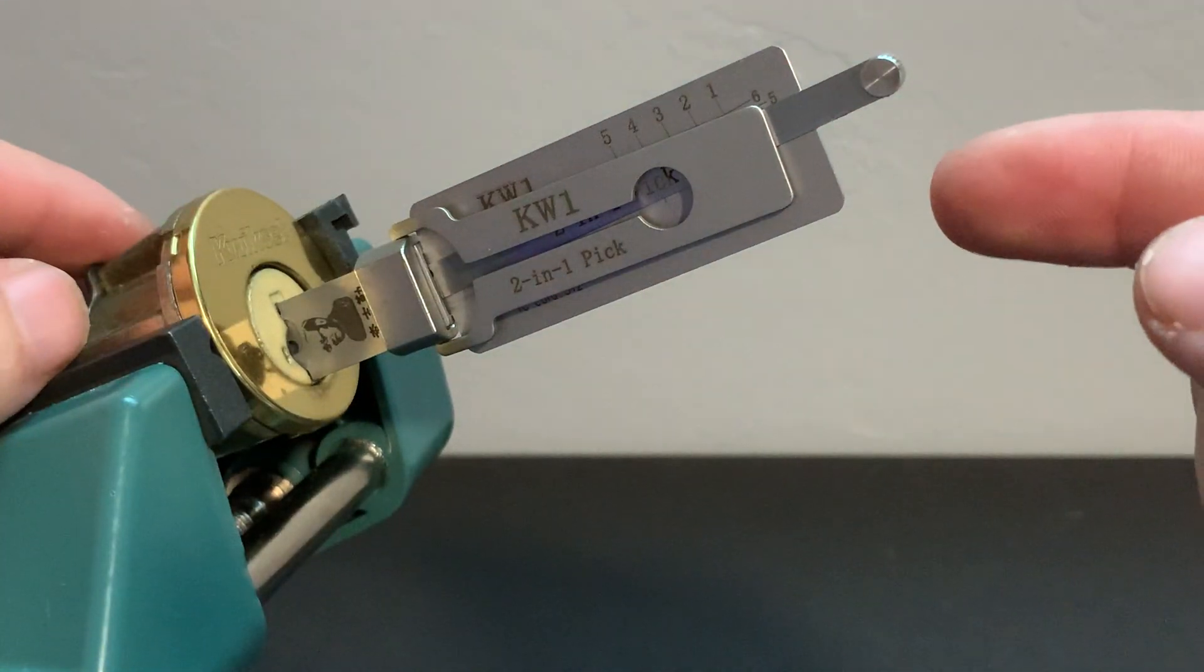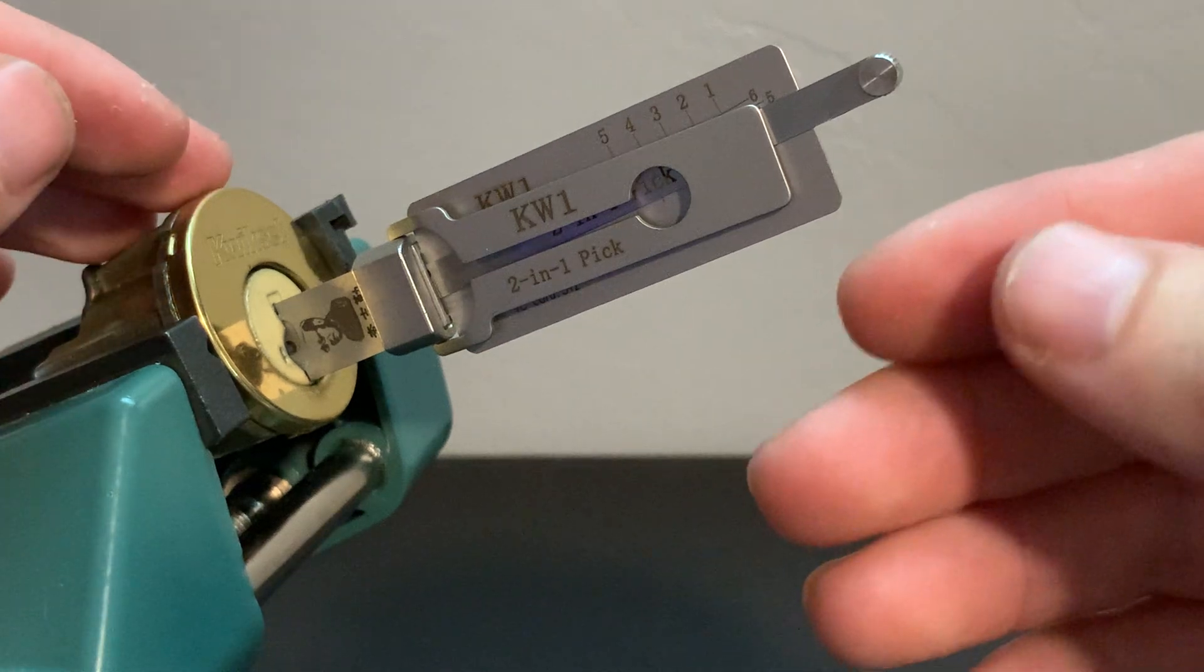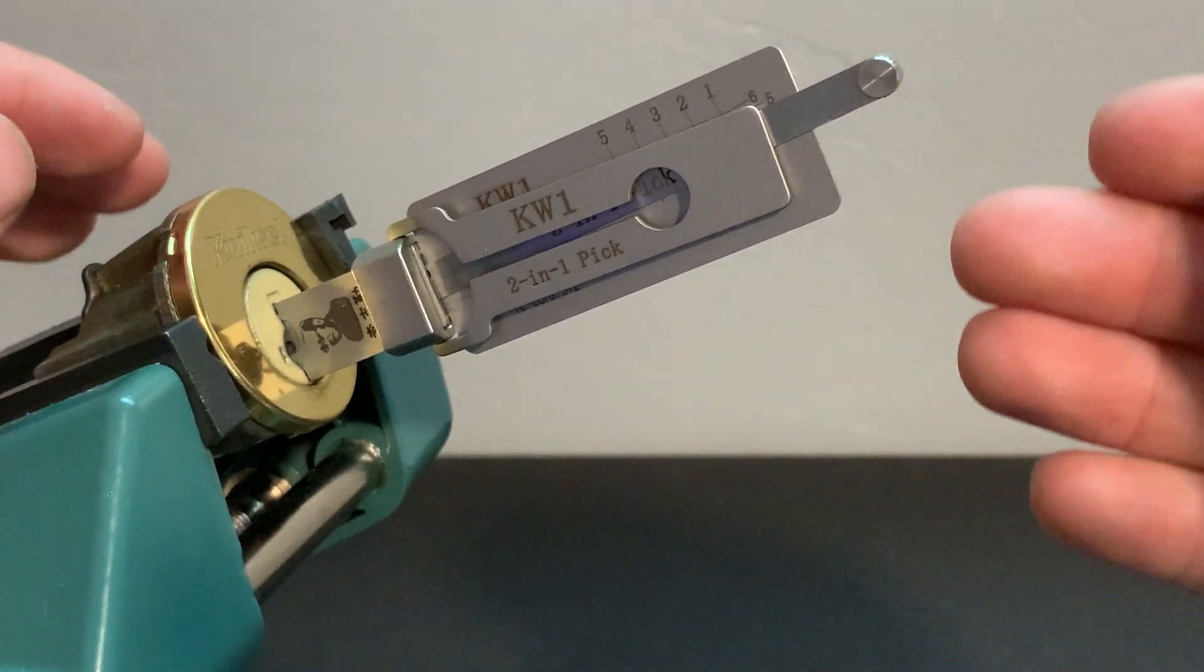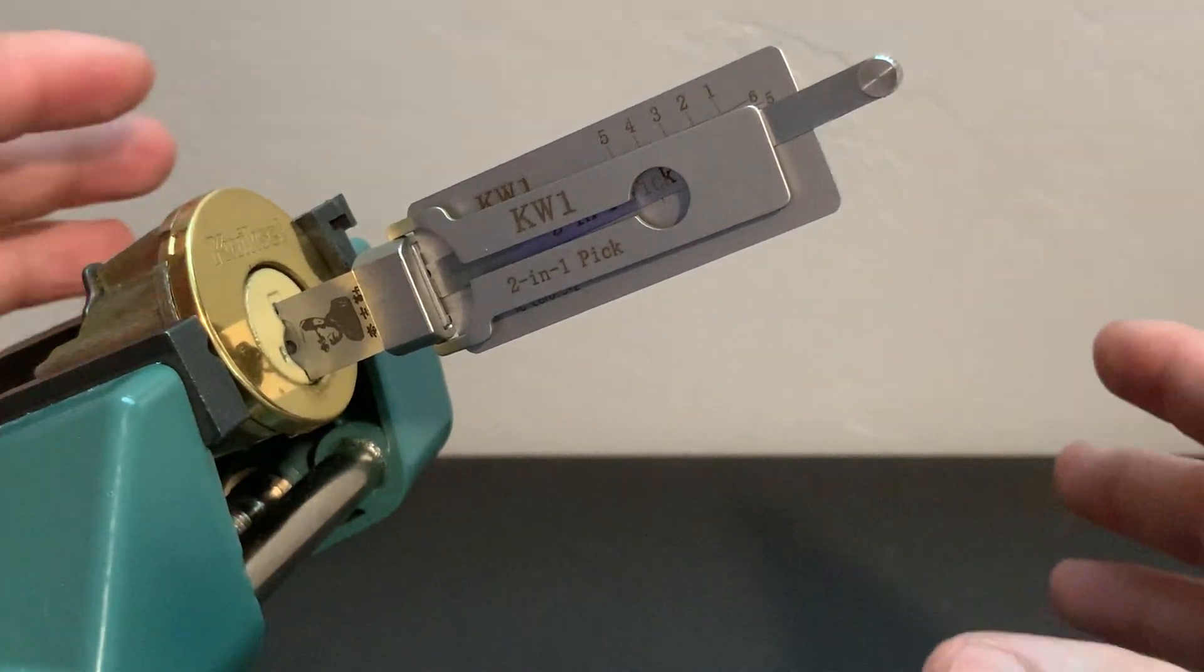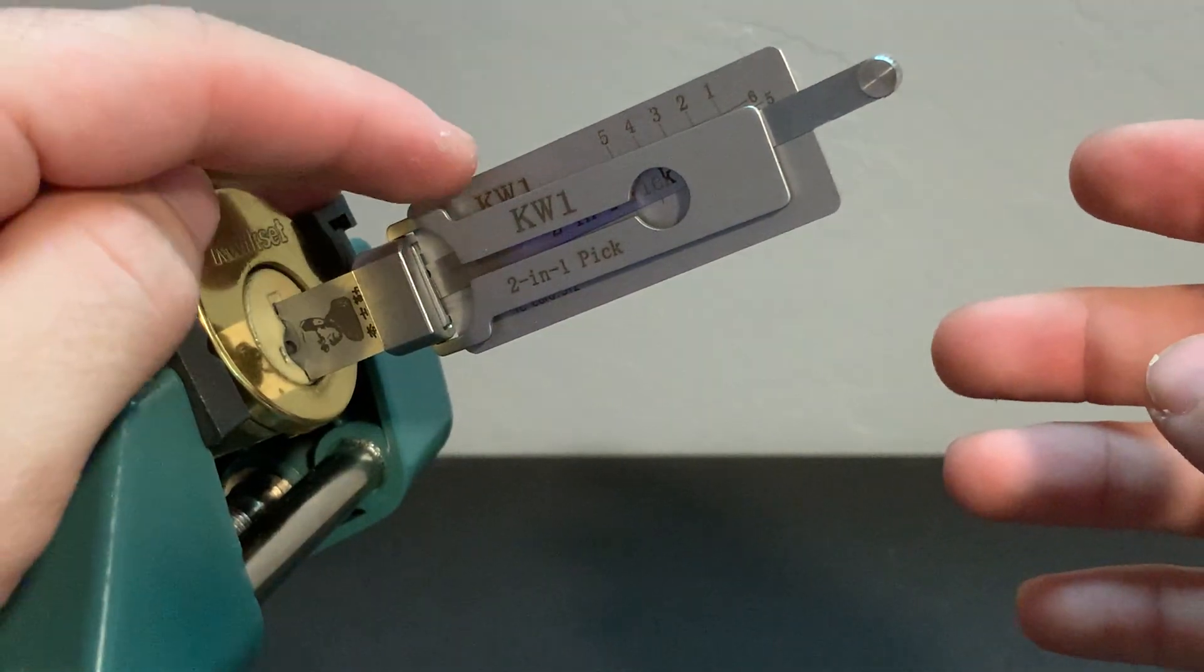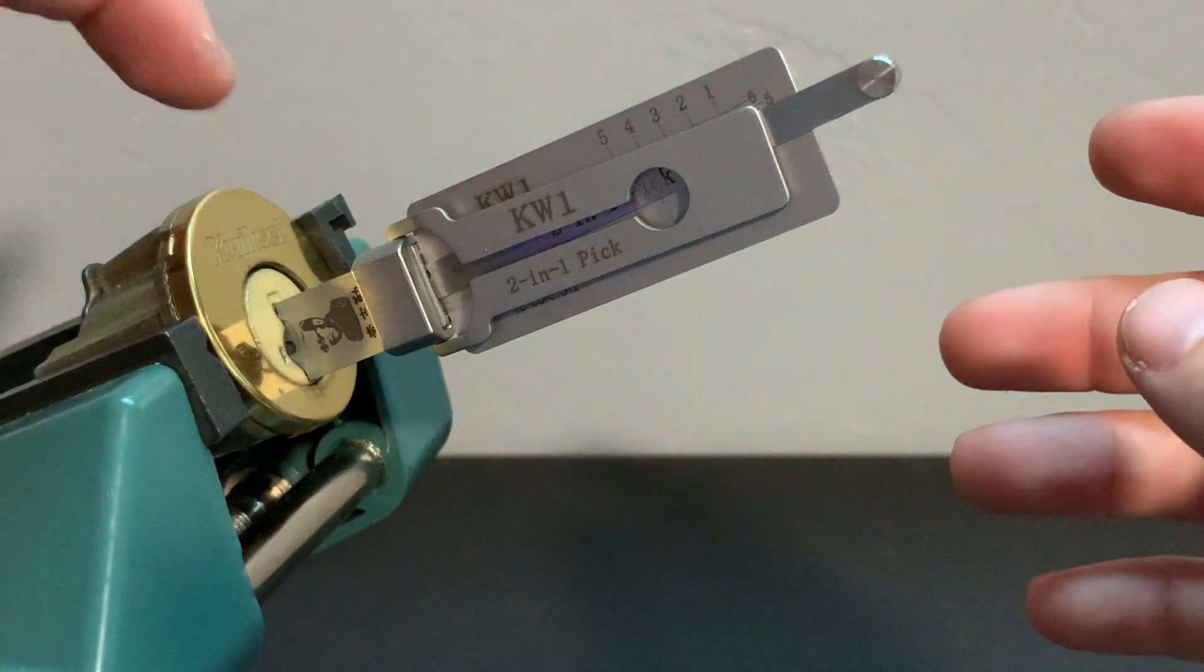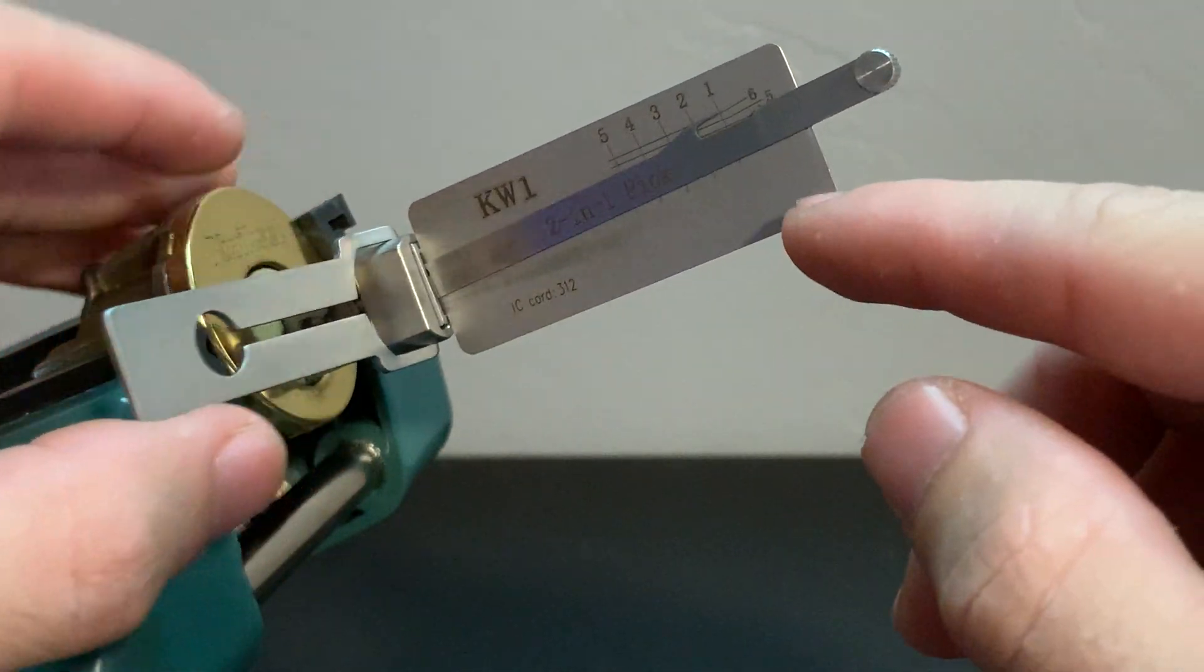A general rule of thumb when it comes to Lishi picks is when you start out you want to use light tension. These do not take much tension to pick considering the basic technique in normal lock picking where you apply moderate tension in some cases. You always want to start out very light with Lishi's except when it comes to these Smart Locks.